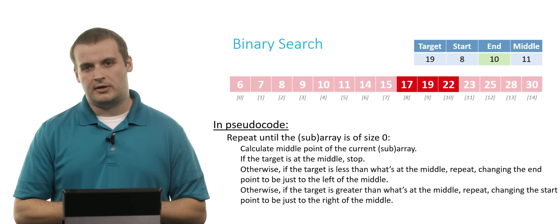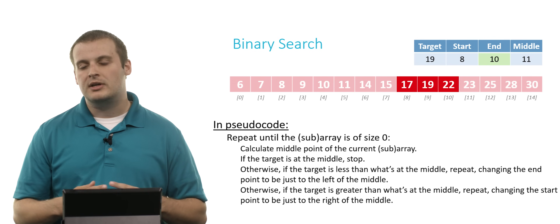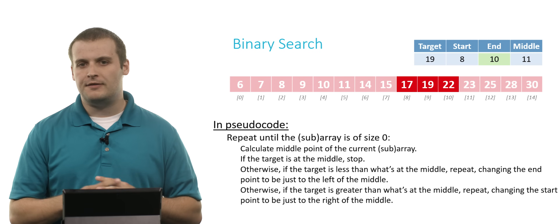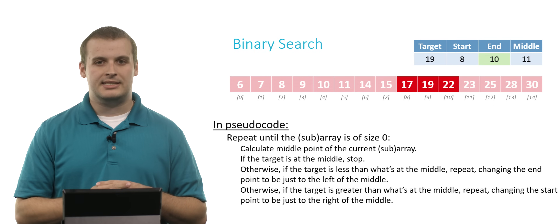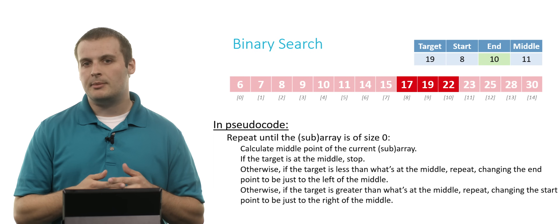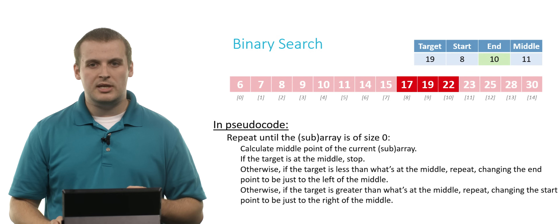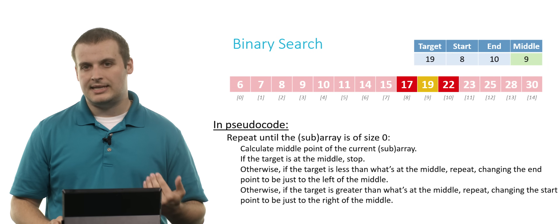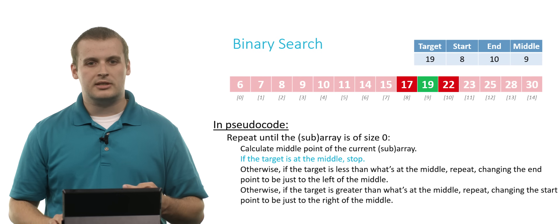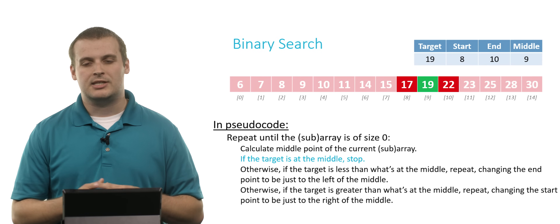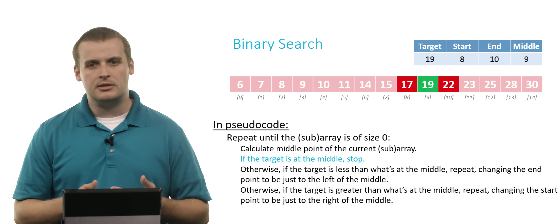Now we've eliminated 12 of the 15 elements. We know that if 19 exists in the array, it must exist somewhere between element 8 and element 10. We calculate the new midpoint: 8 plus 10 is 18 divided by 2 is 9. And look — the target is at the middle. We found exactly what we're looking for. We've successfully completed a binary search.